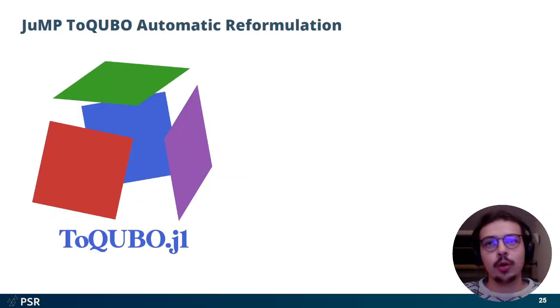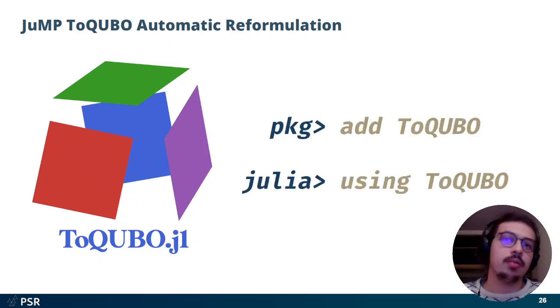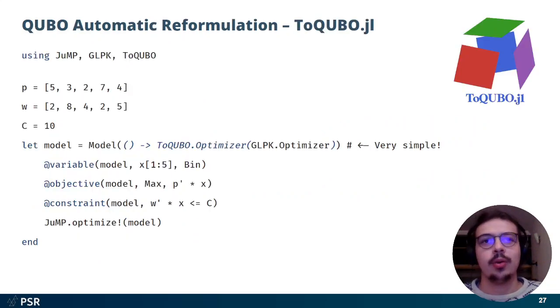We present ToQUBO.jl, a new package to make this process automatically. It is available in the Julia General Registry, and you can just begin using it right now. So how do you do it? You just wrap your favorite solver with the ToQUBO optimizer, and all the magic just happens.